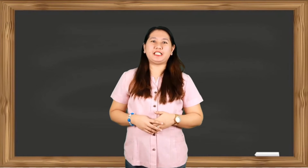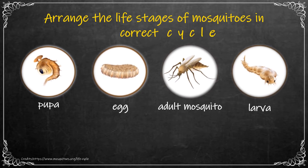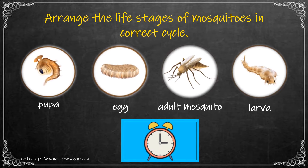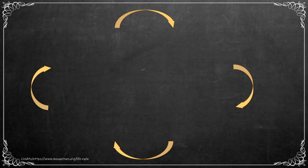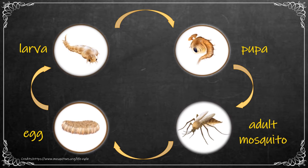Let's have a short activity. Can you arrange the life stages of mosquitoes in the correct cycle? Simply type the correct order for the life cycle of a mosquito. The correct order is egg, larva, pupa, adult. Did you get the right answer? That's awesome!